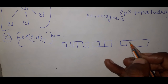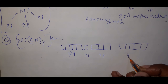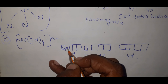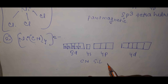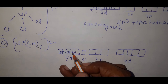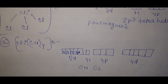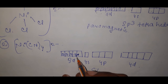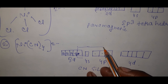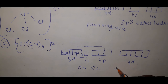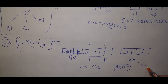With dsp² hybridization using one 3d, one 4s, and two 4p orbitals, four bonds are formed. This gives dsp² hybridization — an inner orbital complex — with a square planar shape.